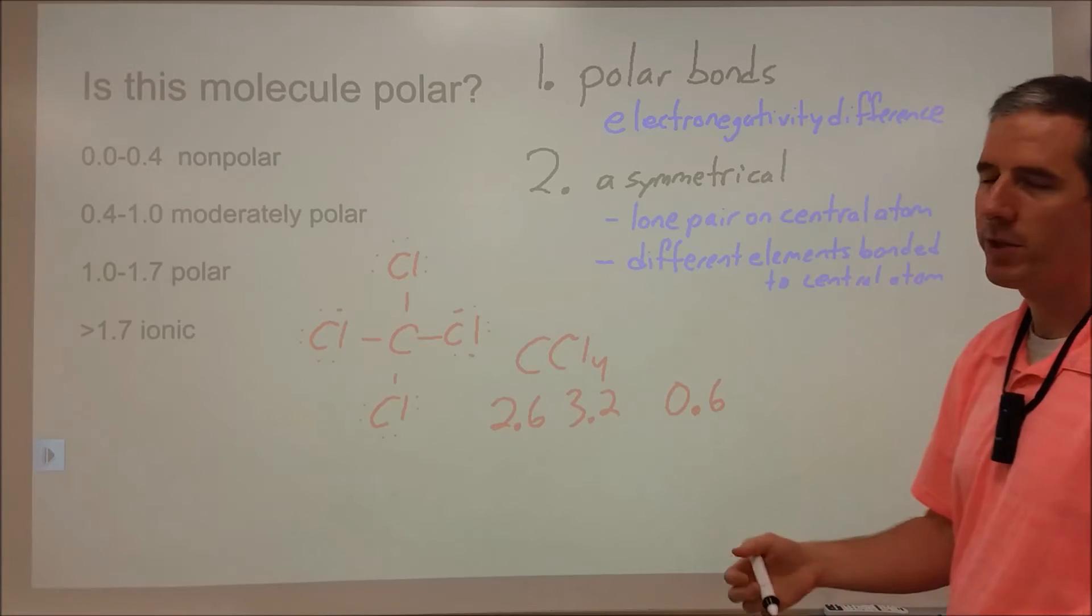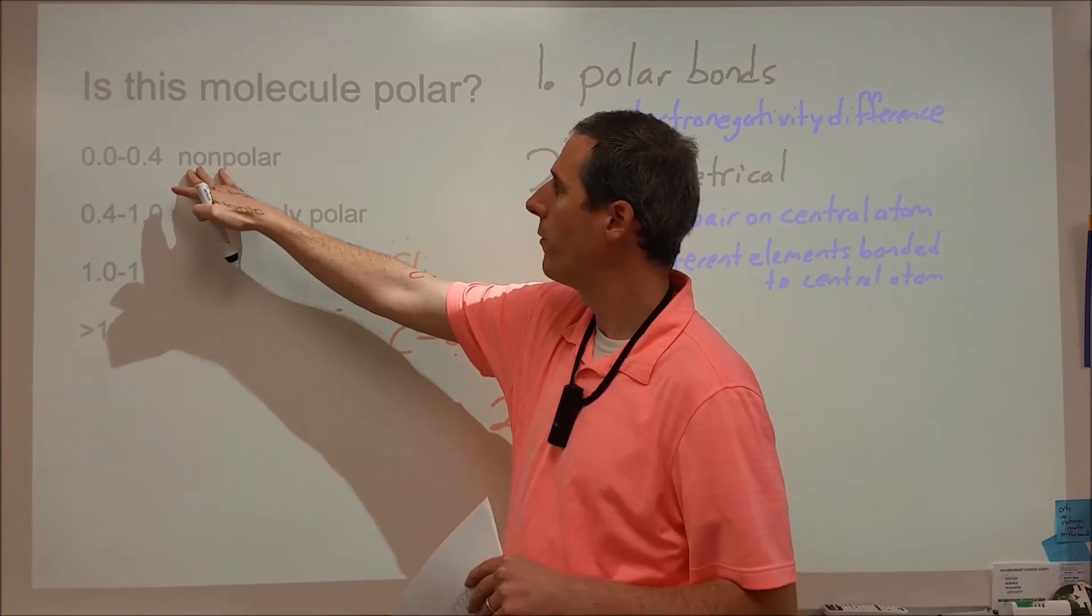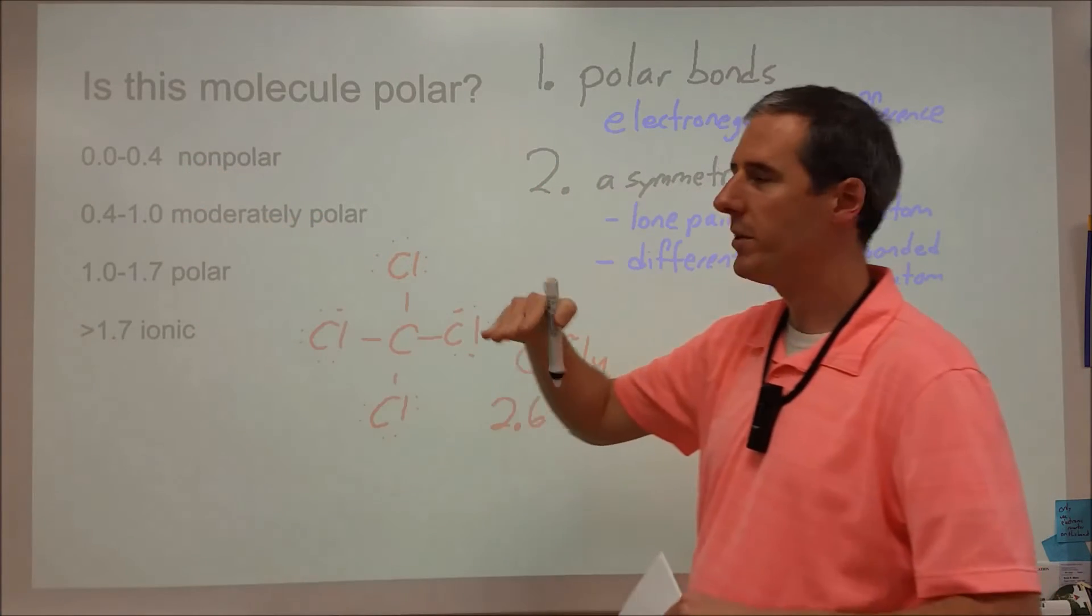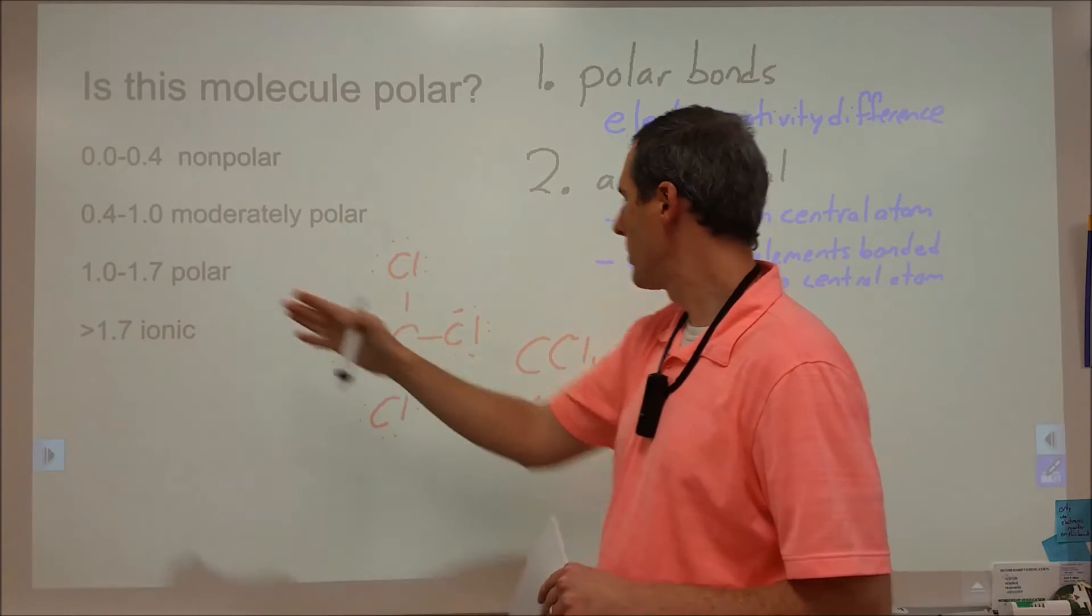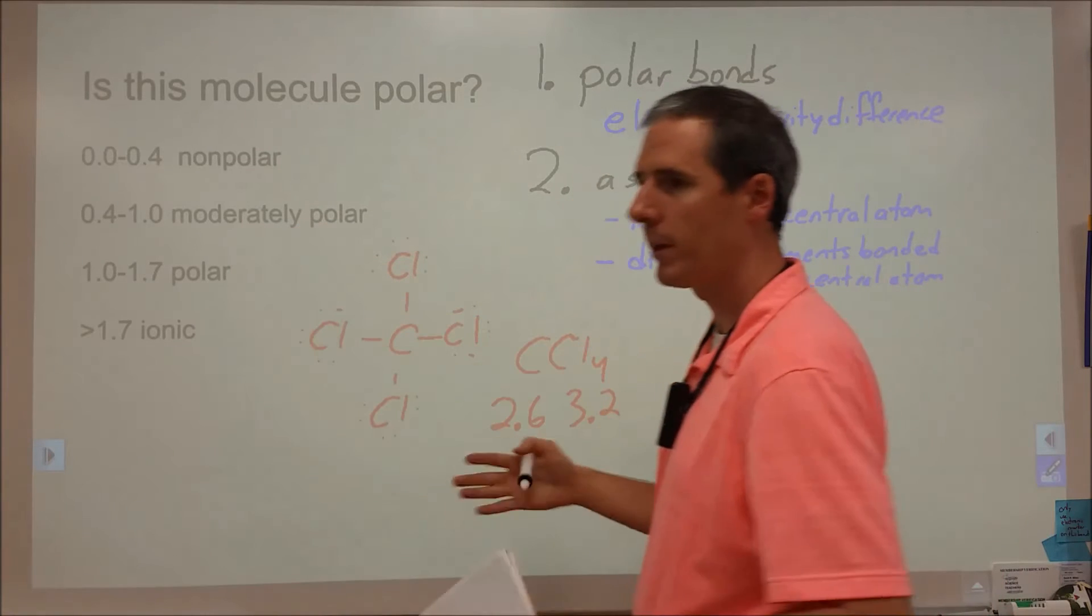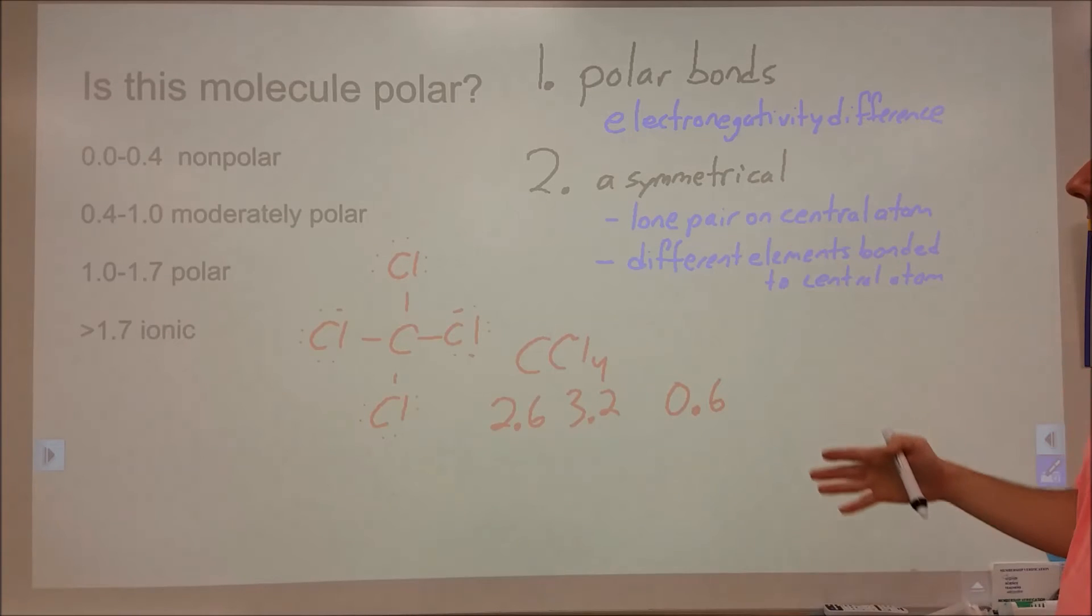And then what we do is we apply that to a scale. So this scale is not meant to be discrete. When we say zero to 0.4 is nonpolar, as you're increasing, even when you get up to 0.4, it's more polarized than it was at zero. So 0.6 here fits into our scale at moderately polar, which we can consider to be an affirmative answer to this. We do have polar bonds. So that's how we would do that analysis.